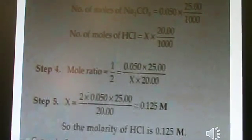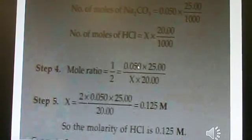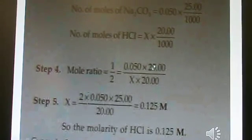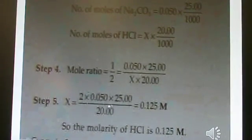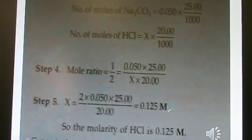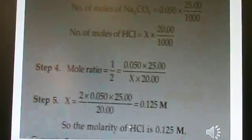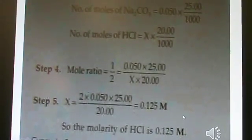To find the molarity, molarity is multiplied by volume in milliliters divided by 1000. Number of moles of Na2CO3 equals 0.05 multiplied by 25 by 1000. Number of moles of HCl equals X multiplied by 20 by 1000. So the mole ratio of one half equals 0.05 multiplied by 25 divided by X multiplied by 20. By solving it, you get X equals 0.125 M. So the HCl molarity equals 0.125 M.